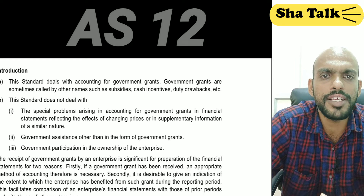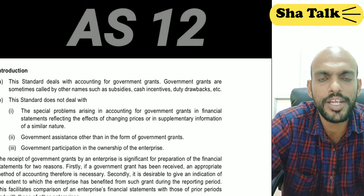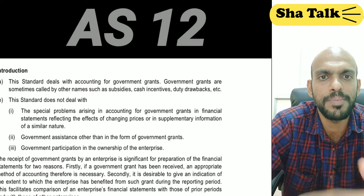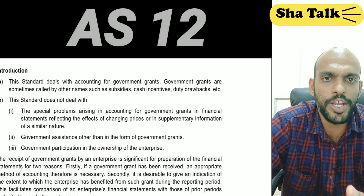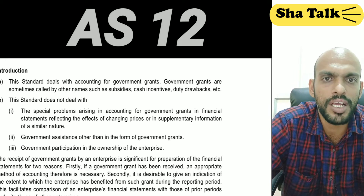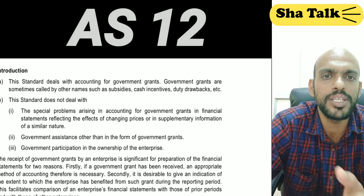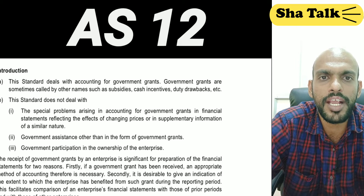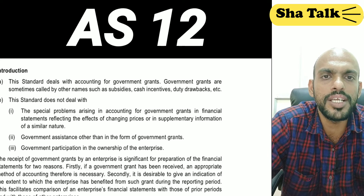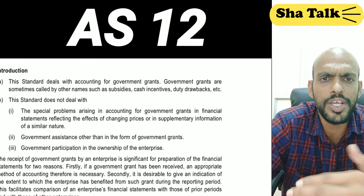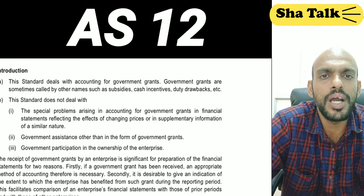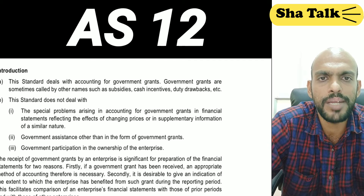What the government does is provide financial assistance for businesses. This assistance can come in the form of a subsidy, a drawback, or a grant. There are three things to understand about government grants.